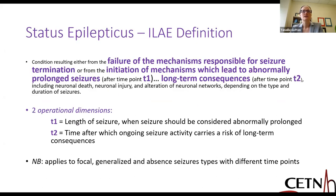Here I have the definition from the International League Against Epilepsy, published in 2015. The most important elements are: first, that status epilepticus happens when we have a failure of mechanisms responsible for seizure termination. And secondly, that there's an initiation of mechanisms that lead to abnormally prolonged seizures. After that, we have long-term consequences. There are two operational dimensions, and they're important from the point of view of timing.